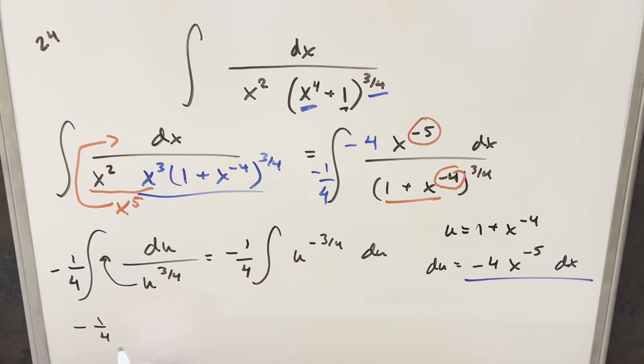We'll just go ahead and integrate this. Adding one to the exponent, we're going to have u to the 1/4th, take the reciprocal, bring it up front, multiply by 4, but then the 4s are going to cancel. And so all I need to do is just back substitute in order to finish this thing off.